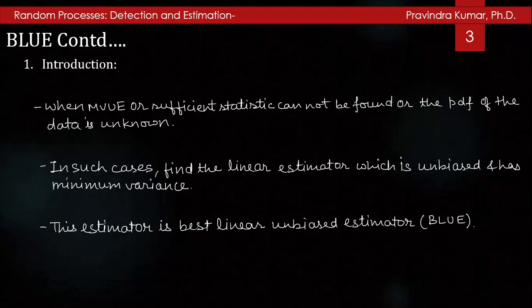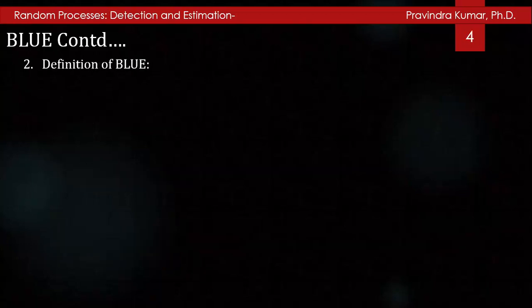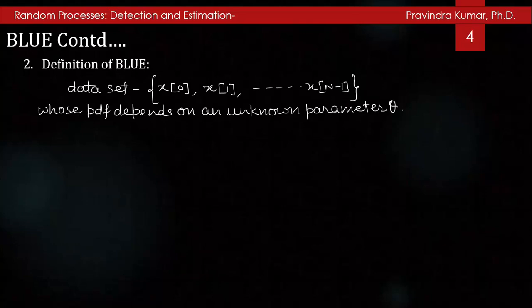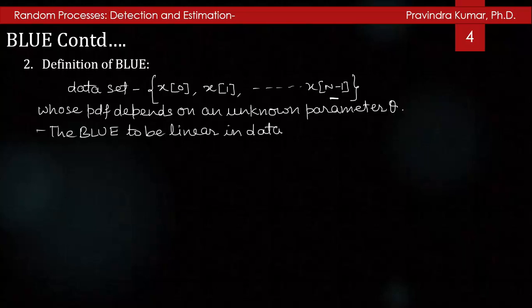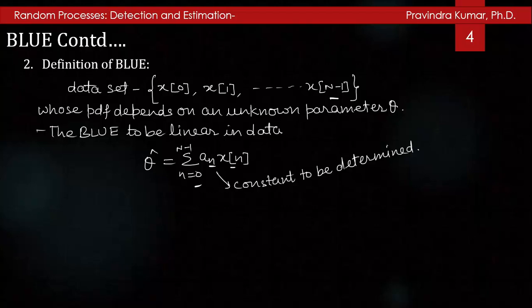BLUE is based on a linear estimator. The definition: we observe the data set x[0], x[1], ..., x[N-1] whose PDF p(x; θ) depends on the unknown parameter θ. The BLUE restricts the estimator to be linear in data, so θ̂ = Σ(n=0 to N-1) a_n x[n], where a_n's are constants to be determined. Depending on the a_n's chosen, we may generate many different estimators of θ. The best estimator or BLUE is defined to be one that is unbiased and has minimum variance, so we determine the a_n's that give BLUE.